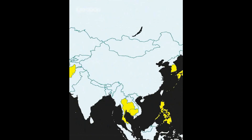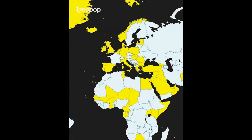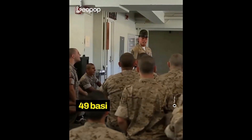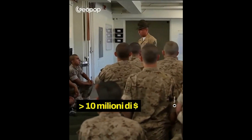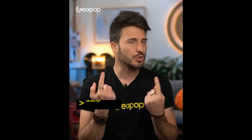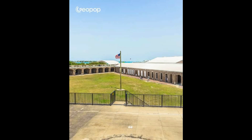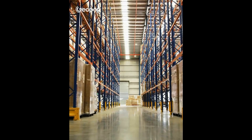Al terzo posto per numero di basi USA c'è la Corea del Sud, che ne ha almeno 79, ritenuta cruciale per occuparsi della Cina ma anche per tenere sotto controllo la Corea del Nord. Al quarto posto c'è l'Italia: ci sono 49 basi americane del valore di almeno 10 milioni di dollari, ma si arriva a più di 120 considerando anche basi più piccole. Ogni base è diversa dalle altre: si va da quelle più grandi, che hanno all'interno la scuola americana per i figli dei militari e il centro commerciale, a strutture molto piccole come magazzini o antenne radio.